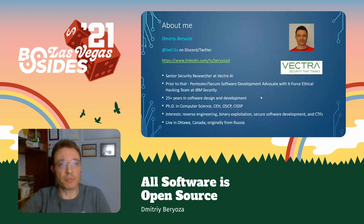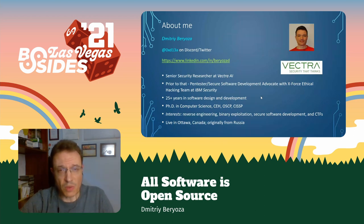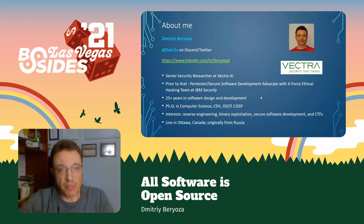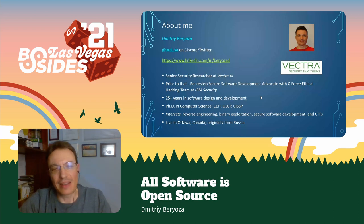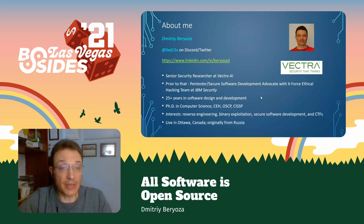My name is Dimitri Brioza. I'm a security researcher with Vectra AI. We do on-prem and cloud threat hunting using AI and machine learning. Before that, I spent some time as a pen tester and secure software development advocate with IBM X-Force Ethical Hacking Team. And before that, I spent a lot of years doing software design and development. As you may have guessed, reverse engineering is one of my interests. And I live in Ottawa, Canada.